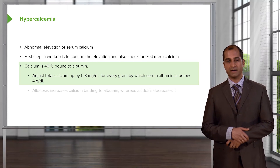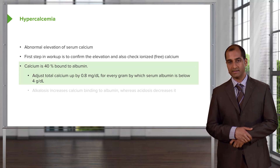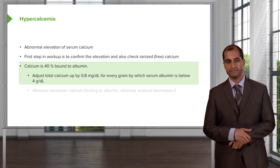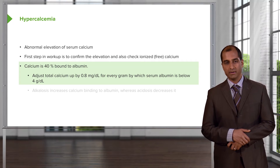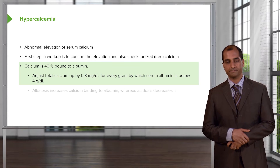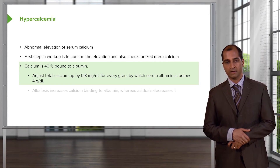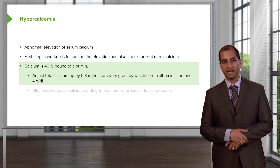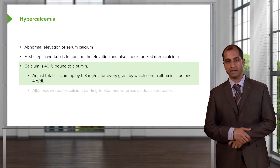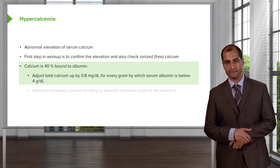When adjusting total calcium — meaning the bound plus the free (ionized) — remember that the majority of total calcium is the bound fraction. Adjust total calcium up by 0.8 milligrams per deciliter for every gram by which serum albumin is below 4 grams per deciliter.